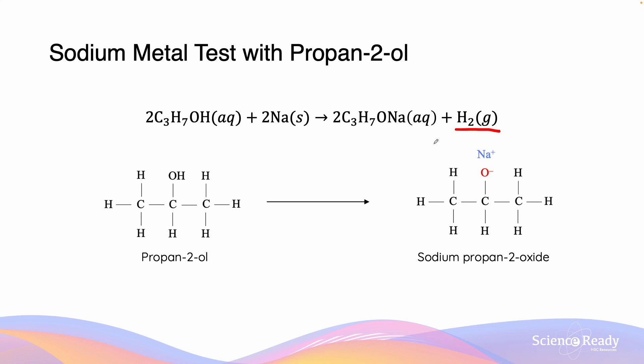It is important to note that the ease of reaction between the alcohol and the sodium metal depends on the very nature of the alcohol — i.e. whether it is primary, secondary, or tertiary — as well as its structure, how bulky it is, and whether or not it is branched.